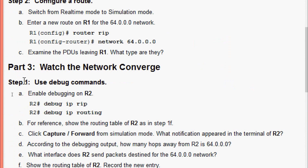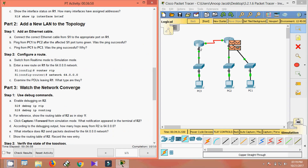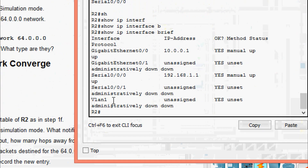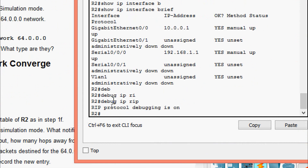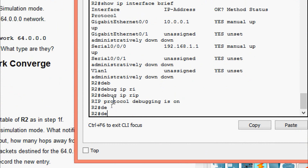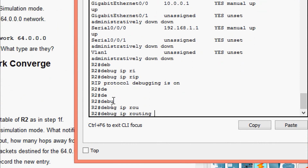Moving to Part 3: watch the network converge. Step 1: use debug commands. On R2, we enable debugging with 'debug ip rip' and 'debug ip routing'. For reference we will also show R2's routing table as in Step 1f.